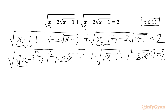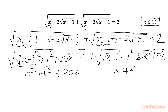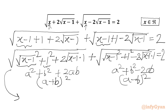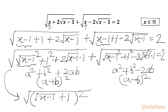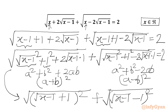Now if I assume √(x−1) = a and 1 as b, then the first expression is a² + b² + 2ab, which equals (a + b)², and the second is a² + b² − 2ab, which equals (a − b)². So we can write our equation as: √((√(x−1) + 1)²) + √((√(x−1) − 1)²) = 2.